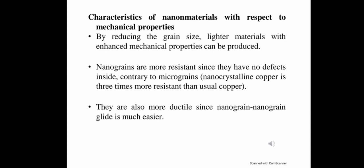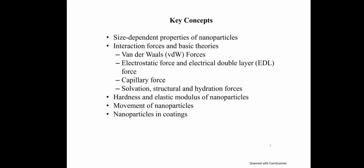Characteristics of nanomaterials with respect to mechanical properties: by reducing the grain size, lighter materials with enhanced mechanical properties can be produced. Nano grains are more resistant since they have no defects inside, contrary to micro grains. Nano crystalline copper is three times more resistant than usual copper, because nano crystalline copper has smaller size. They are also more ductile since nano grain glide is much easier, so they can be converted into wires. This is the end of my presentation; the next part will be explained by my class fellow, Mohamed Naz. Thank you.